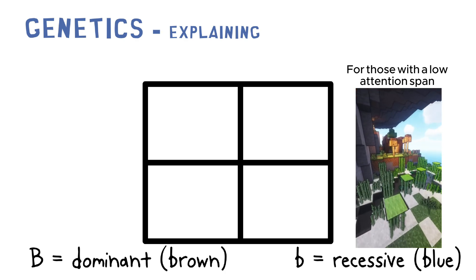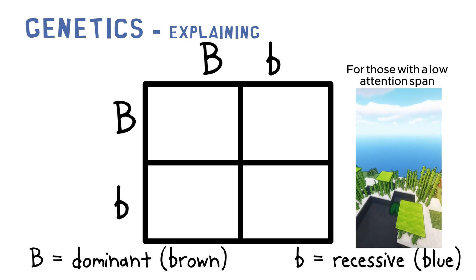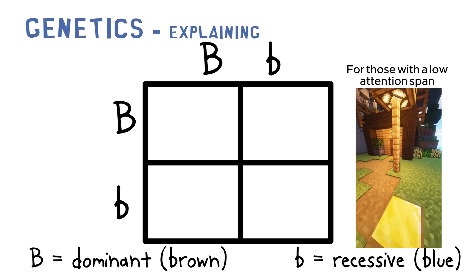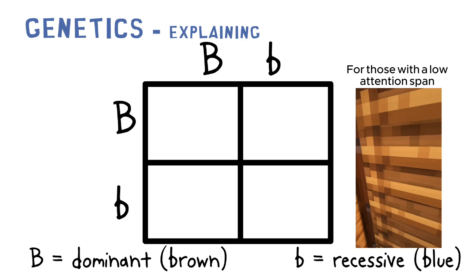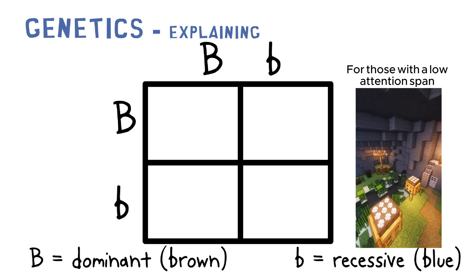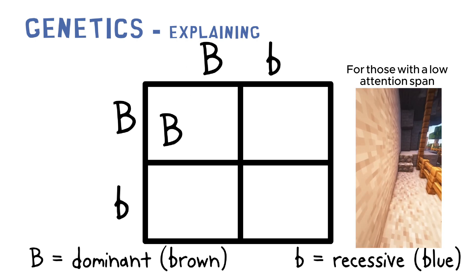Two parents with the uppercase B and lowercase b have a child. Now let's put this in the Punnett square. You set it up like this. So we put our uppercase B here and our lowercase b here, same thing for the other side.